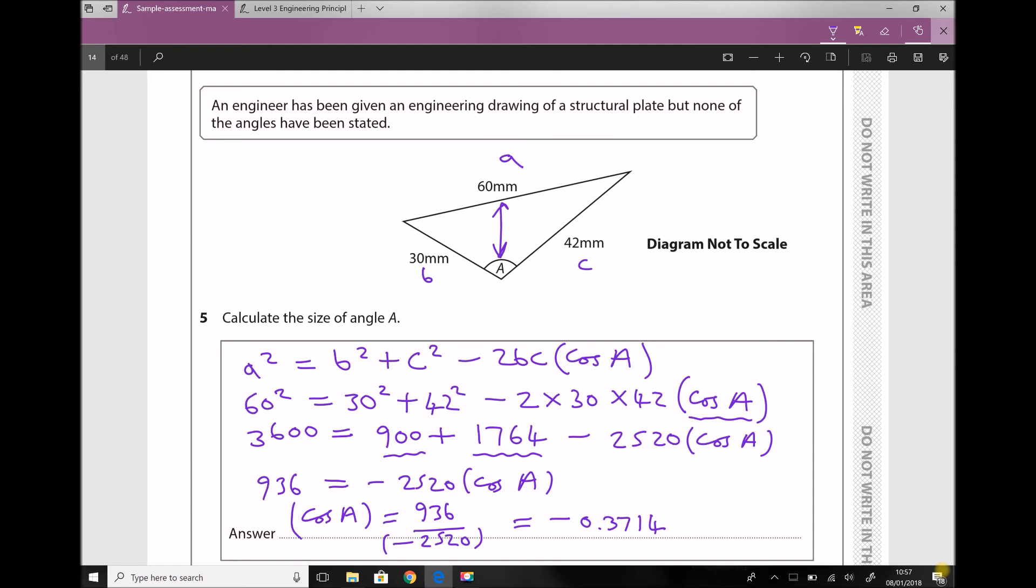The inverse of cos is cos to the minus one, so our final stage is: A equals cos to the minus one, and I'm going to write in brackets 'of answer' because your calculator will have a function ANS which will recall the minus 0.3714.